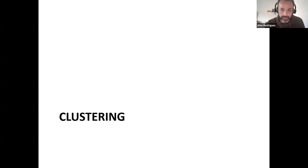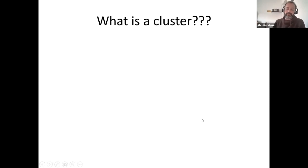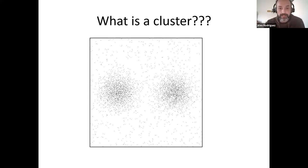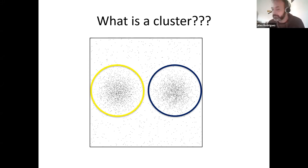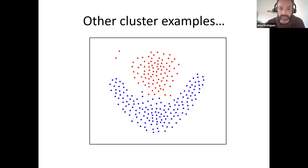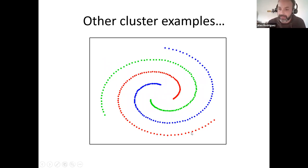The first question one can ask is: what is a cluster? I think all of you will agree that if I have this distribution of points in two dimensions, it's kind of clear that I have two clusters — two groups of points. But there are many many possible clusters we can imagine, even in two dimensions. This one is strange, but it's anyway a group of three clusters.